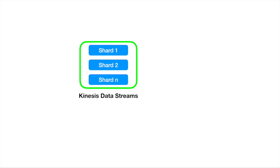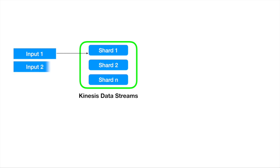Once the data stream is created, we design our input sources. We can configure any number of producers, which will write or send log data to our Kinesis Data Stream. The data will be stored in different shards based on their partition key.